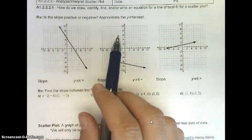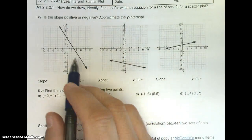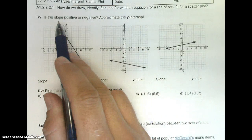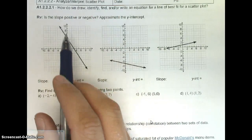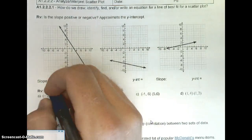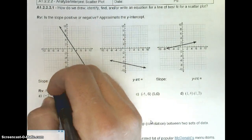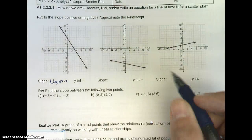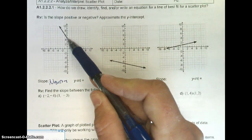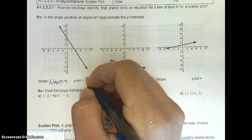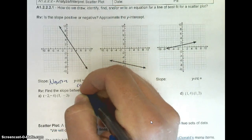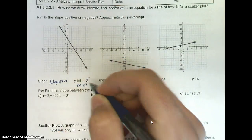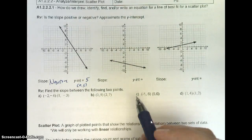Is the slope positive or negative? Approximate the y-intercept. As it's going to the right, you see how it's dropping — that means my slope is negative. Now, I said to approximate the y-intercept. The y-intercept is where it hits the y-axis, so right there around 5. Your y-intercept is 5, or we can write that as (0, 5) if you're asking for the point.